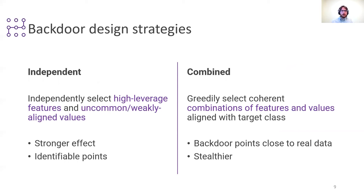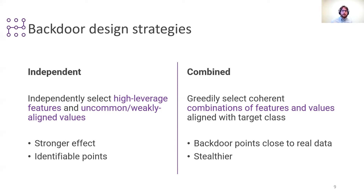With the aggregate information obtained using SHAP, we devise two strategies to create the triggers. The first aims at maximizing the impact of backdoors by selecting the highest leverage features, identified by the sum of their absolute SHAP values, and then selecting sparse or weakly aligned values to assign to those features. In the second strategy, we iteratively generate the trigger by repeatedly searching for the single feature most aligned towards the target class and finding a correspondingly aligned value to assign. We then condition successive selection iterations by discarding all observed points that do not contain the current trigger. This second approach generates contaminants that are close to observed points and therefore blend in very well with the real data.